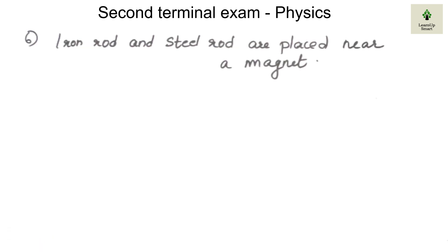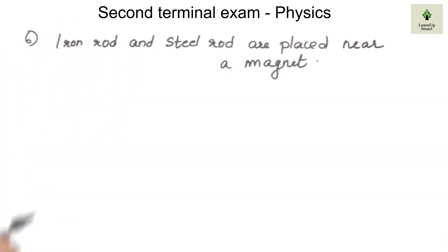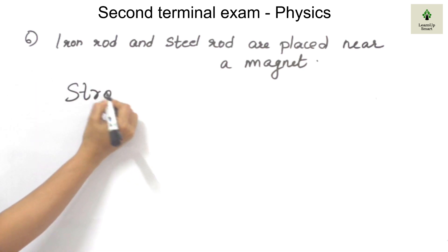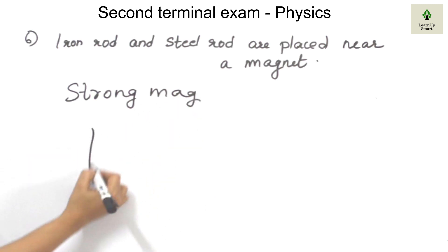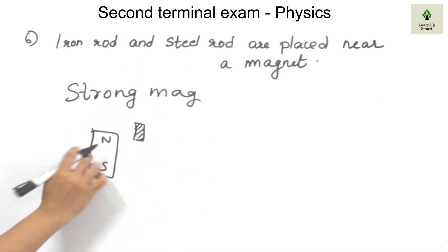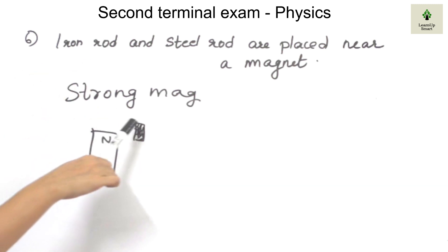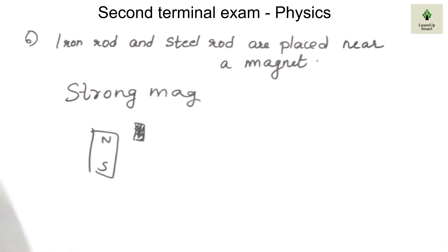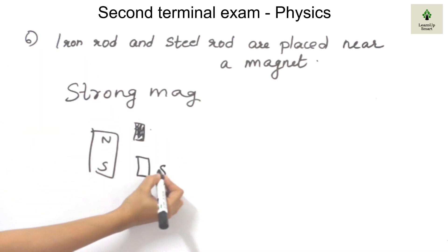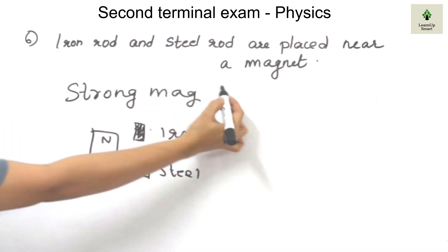An iron rod and a steel rod are placed near a magnet. Which rod acts as a stronger magnet? A permanent magnet is placed near iron and a steel rod. If you place iron near a magnet, the iron will act as a strong magnet temporarily. If you place steel near a magnet, the steel will also act as a strong magnet and retain its magnetism.